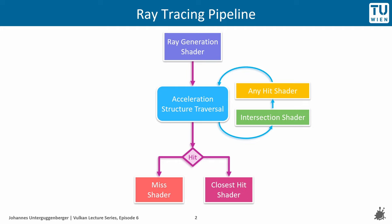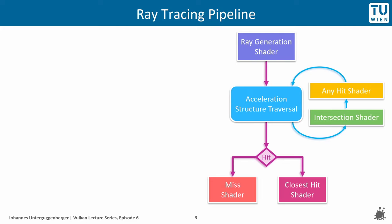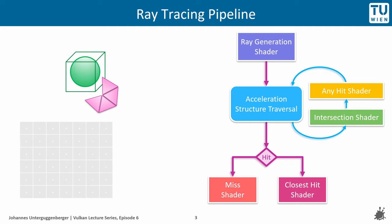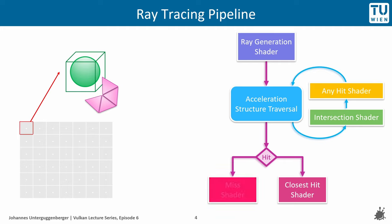Let us look at the example once again. Assume that we have put a small triangle mesh and a procedurally described sphere into our acceleration structure. We can then add an image and in a ray generation shader, we generate one ray per pixel. That ray is created and sent through acceleration structure traversal, potentially in a massively parallel way if a GPU with hardware-accelerated raytracing is used. If the ray does not hit anything, the miss shader is invoked, which does not modify the pixel's value in this example.